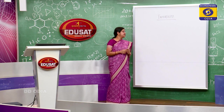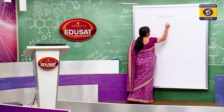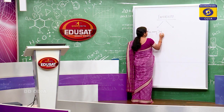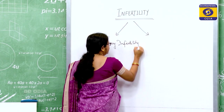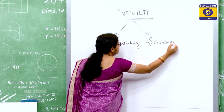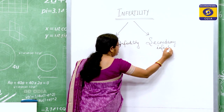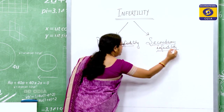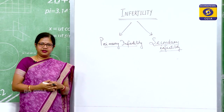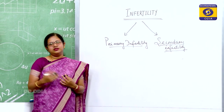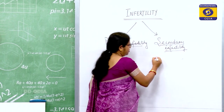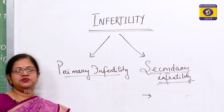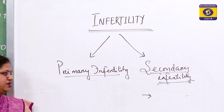We can categorize infertility into two broad categories: primary infertility and secondary infertility. If a fertile couple already has a child and cannot produce subsequent children, we say it is a case of secondary infertility — because they already had a child but further addition to the family was not possible.